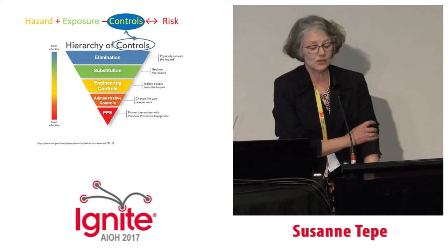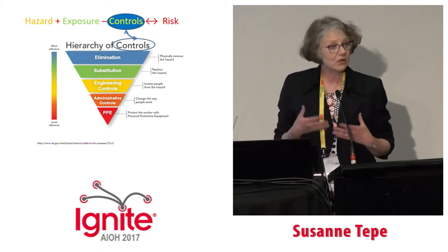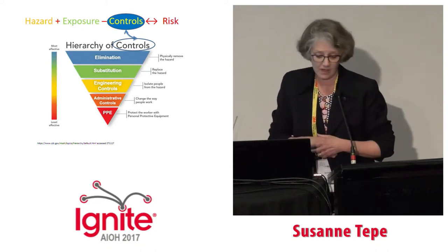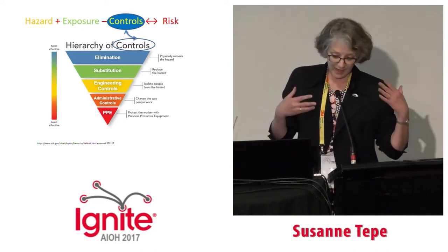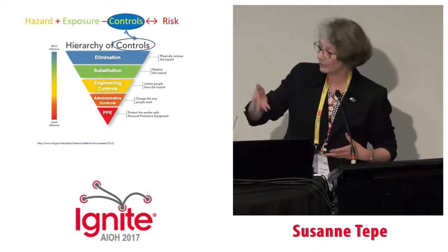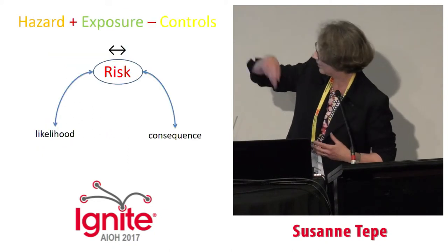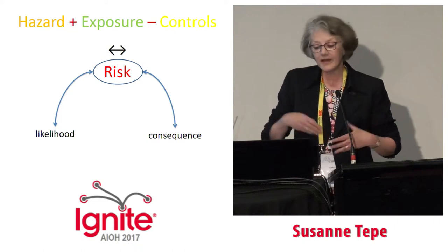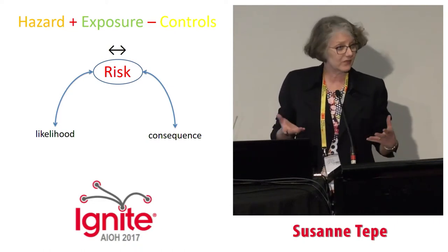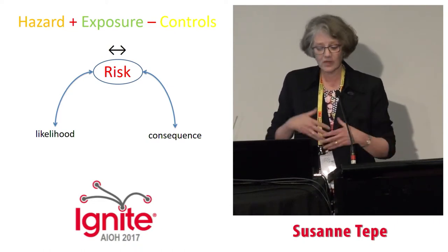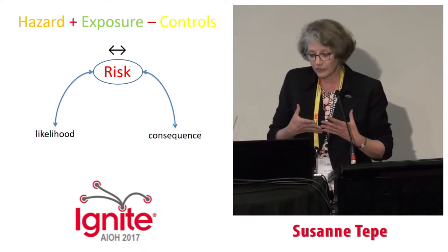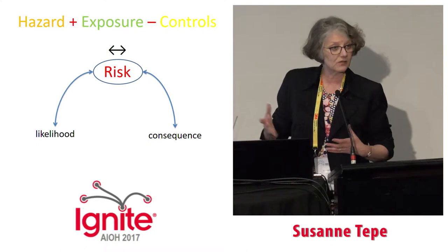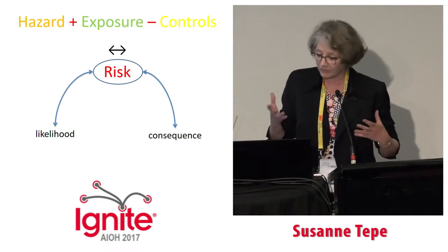From that you add controls, or you take away controls that will control those aspects of the hazards and the exposure. You would all know the hierarchy of controls, and I would go into a lot more detail with my students. And that's then going to tell you about the risk that you've got. So you've got your hazards, you've got the potential for exposure to those hazards, you've put in controls, and that tells you about the likelihood and consequence of adverse outcomes.